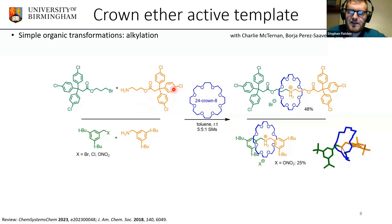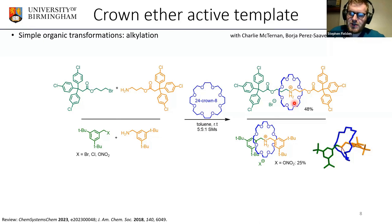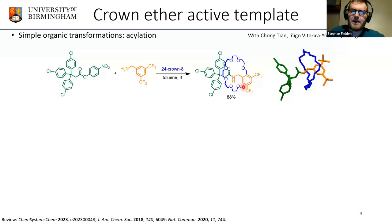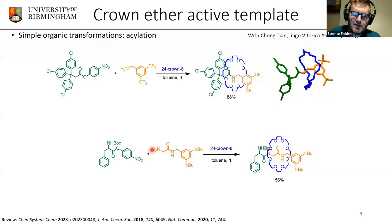Rather than forming a pre-intermediate, we can simply react two things together to form the final rotaxane in the presence of a macrocycle. The product is quite stable due to strong hydrogen bond interactions between the crown ether oxygens and the ammonium center. We can also do this using amide formation — taking a simple activated ester and an amine, reactions used all the time in biochemistry to make proteins. We generate amide or peptide rotaxanes this way, including glycine and phenylalanine to make peptide-like rotaxanes.